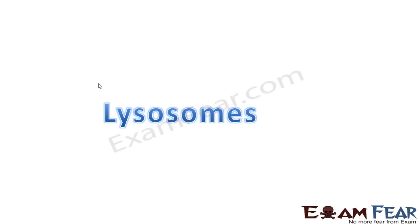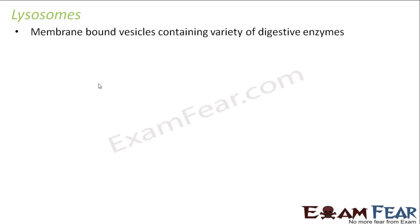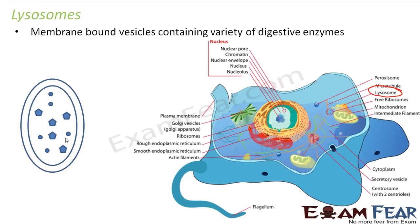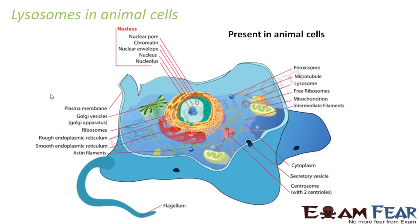Lysosomes are membrane-bound vesicles containing a variety of digestive enzymes. They are vessel-like structures with many digestive enzymes inside, surrounded by a membrane. In an animal cell, the lysosome is located somewhere within the cell as a vessel-like structure.